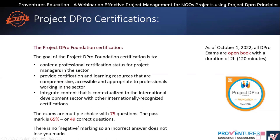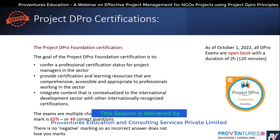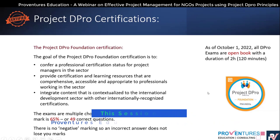The goal of the Project DePro Foundation certification is to confer a professional certification status for project managers in the sector, provide comprehensive, accessible, and appropriate learning resources, and integrate content contextualized to the international development sector with other internationally recognized certifications. The exam has 75 questions; you need 65% — that's 49 correct answers — with no negative marking. Since October 2022, DePro exams are open, and the duration is 120 minutes.